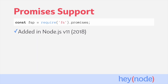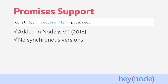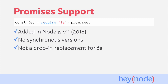Node.js version 11 officially added promise support to the fs module. From version 11 and above, you can access the promise-based versions of fs methods by requiring the promises property of the fs module. There are promise-based equivalents of most of the asynchronous fs methods, but there are no promise-based versions for their synchronous counterparts. Instead of taking a callback, these promise-based versions return a promise. Otherwise, they're functionally the same. It's important to note that fs.promises is not a drop-in replacement for the fs module, as many other parts of fs are not available from the promises object.